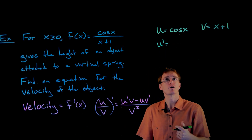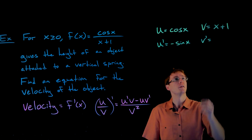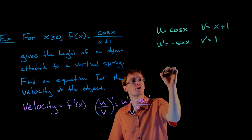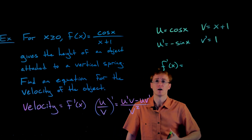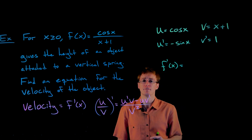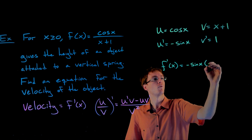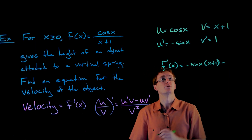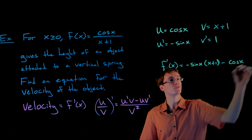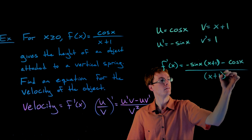To find our derivative, we need the quotient rule since f has cosine of x in the numerator and x plus one in the denominator. The derivative of cosine is negative sine, and the derivative of x plus one is just one. Now we construct f prime of x using u prime times v minus u times v prime all over v squared: that's negative sine of x times the quantity x plus one, minus cosine of x, all over the quantity x plus one squared.